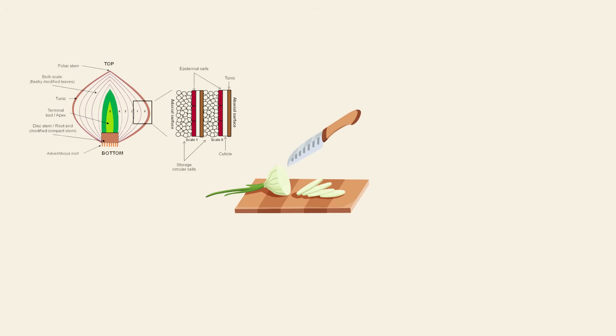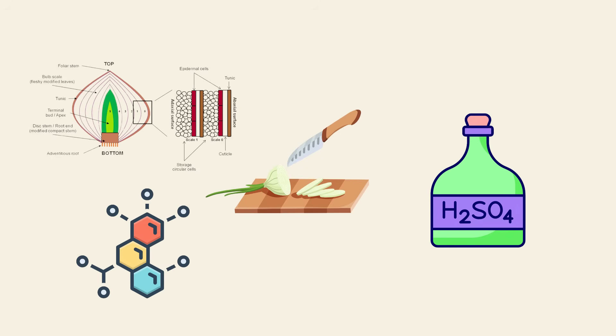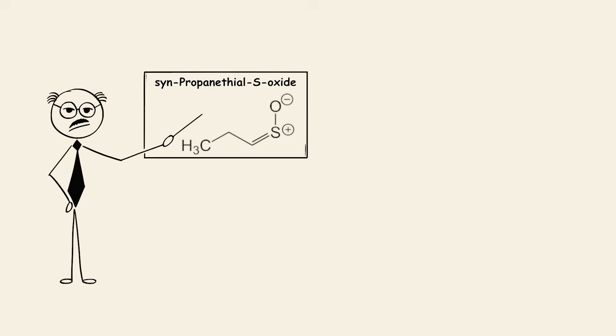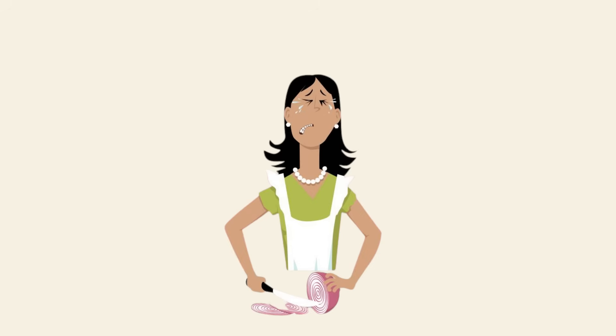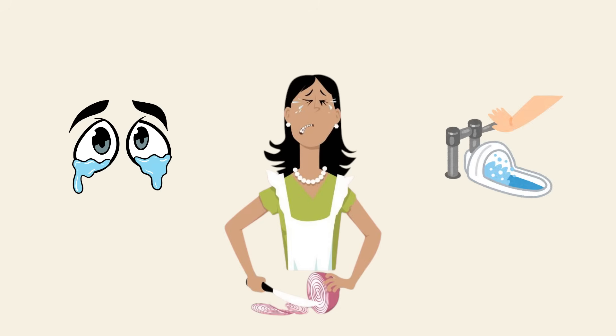When you slice into an onion, you break its cells, releasing enzymes that react with sulfur-containing compounds. These create a volatile gas called synpropanethyl S-oxide. When this gas reaches your eyes, it reacts with the moisture in them to form mild sulfuric acid. That's what causes the burning sensation. Your eyes then produce tears to flush the irritant out.